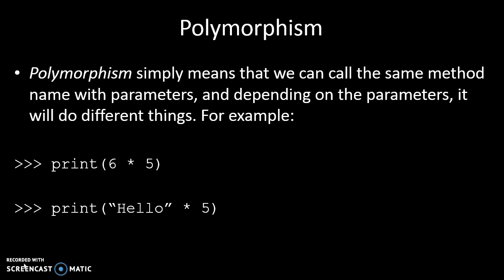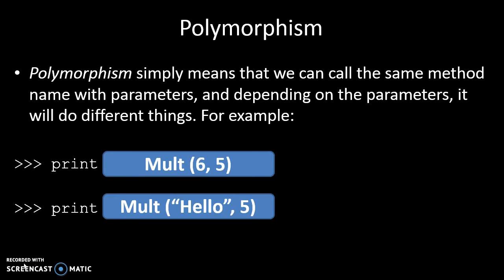If we look at the code below: print 6 multiply by 5, and print hello multiply by 5. There's a method being called inside the print brackets which is the multiply method. The first call is saying call a method called mult and multiply 6 by 5, and the second one is saying call mult and pass in parameters hello and 5.